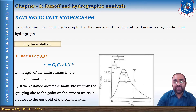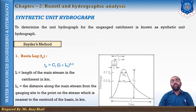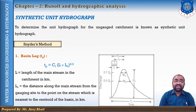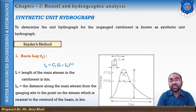To find out the basin lag we have the formula: tp equals Ct into L into Lc raised to 0.3, where L is the length of the main stream in the catchment and Lc is the distance along the main stream from the gauging site to the point on the stream nearest to the centroid of the basin.